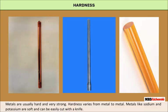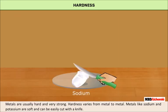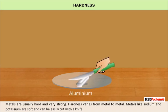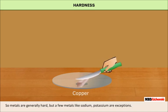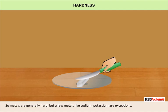Metals are usually hard and are very strong. Hardness varies from metal to metal. A metal like sodium is soft and can be easily cut with a knife, while aluminium cannot be cut with a knife. So, metals are generally hard but a few metals like sodium, potassium, etc. are exceptions.